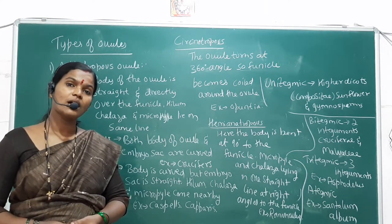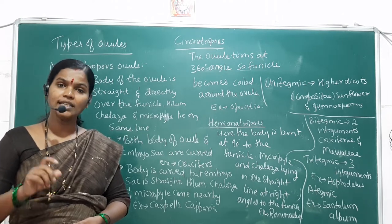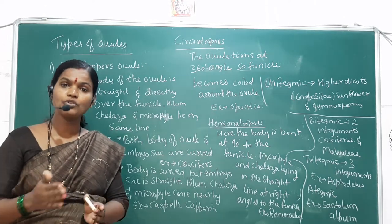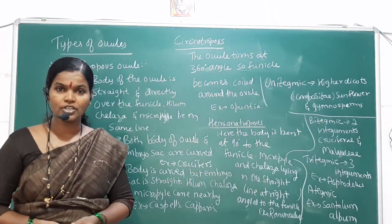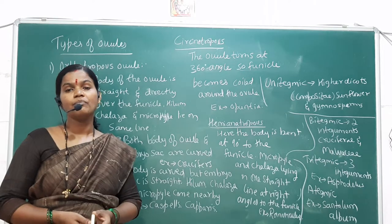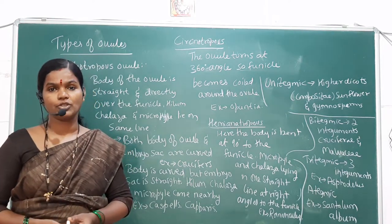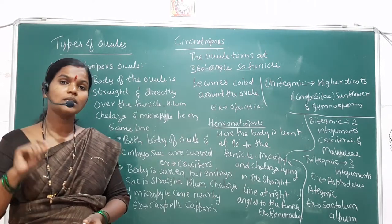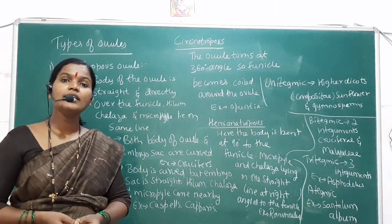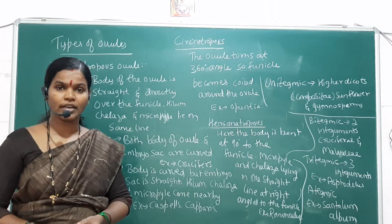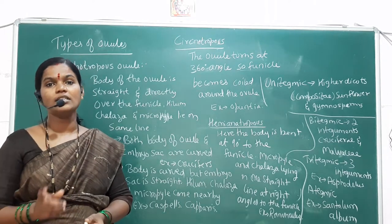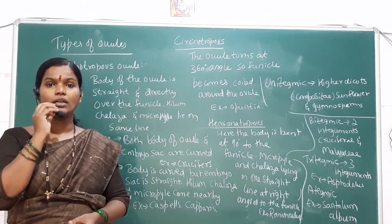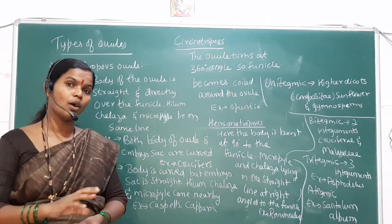Next is the central cell. The central cells are haploid cells. At the time of fertilization, when they are fused together, they become diploid in nature. This diploid form is called the secondary nuclei.